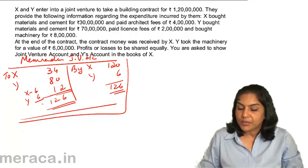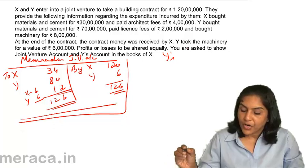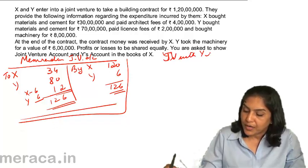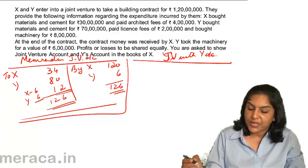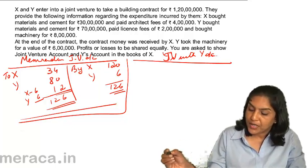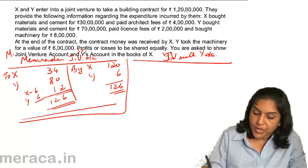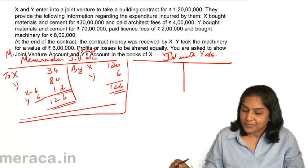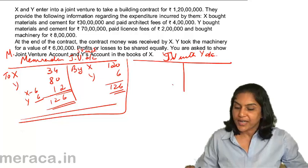So how would Y's account look in the books of X? We will not prepare Y's account here. We will actually prepare a joint venture with Y account, because we have already prepared Y's account before. The joint venture with Y account will have only transactions which X has entered into.